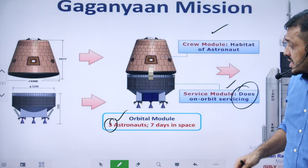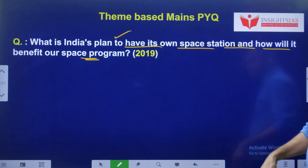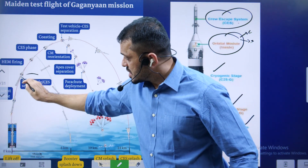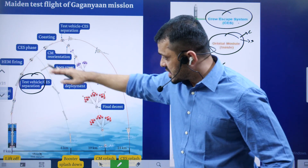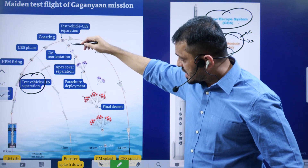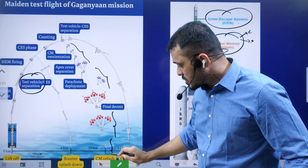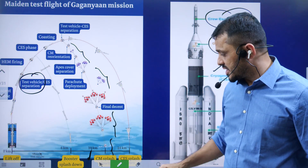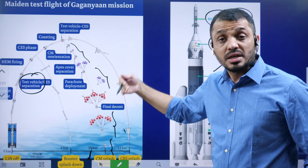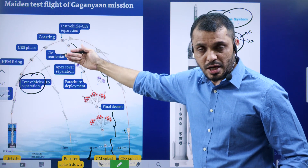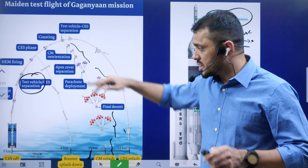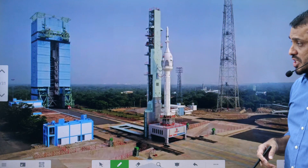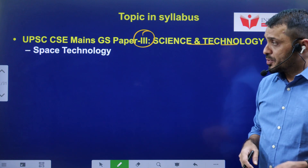Today we tested two things: number one is the test vehicle, and the other one is the crew escape system. After the launch, the crew escape system was triggered. It traveled further, the parachutes activated, and it resulted in the safe landing of the crew module - 10 kilometers away from the Sriharikota space station. The crew module was collected by the Indian Navy. In the original mission also, if any faults are detected, the crew escape system will be activated, the crew module will be detached, and it will splash down onto the ocean - saving the crew. For safety, ISRO even extended the deadline of Gaganyaan.